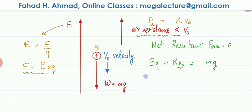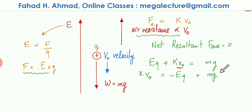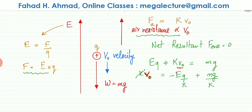To plot the graph of V₀, I'll make V₀ the subject of the equation. Keeping KV₀ on the left-hand side: KV₀ = Mg − EQ. Then dividing through by K: V₀ = (Mg/K) − (Q/K)E. Note that Mg is a constant since mass and gravity don't change, and K is also a constant, so Mg/K is constant.